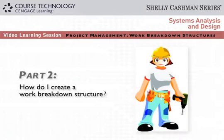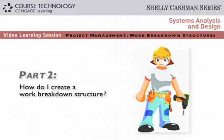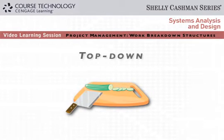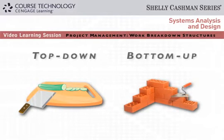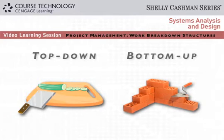You can create a work breakdown structure from the top down, or from the bottom up. A top-down approach breaks the project into smaller task groups, and then into individual tasks. A bottom-up approach identifies all the tasks first, no matter how small, and then builds them back into a logical structure. Depending on the project, you might use either method or both. The objective is to build a structure that lists and describes all tasks accurately.